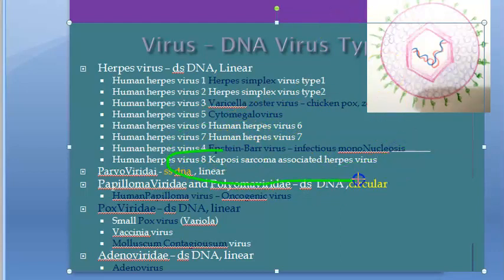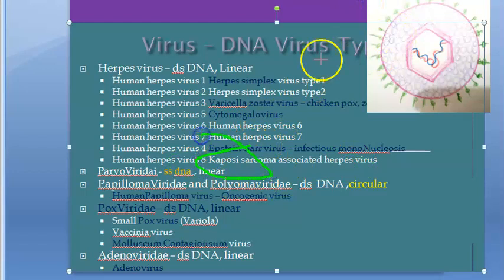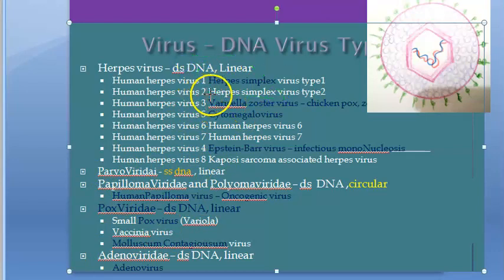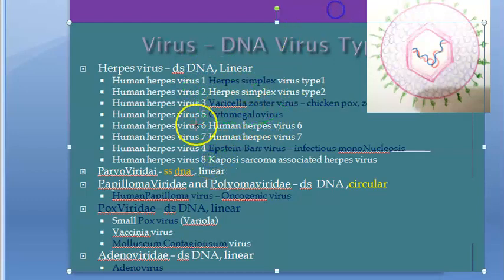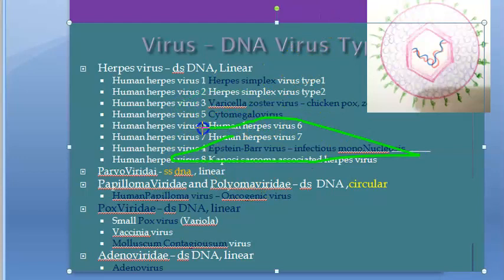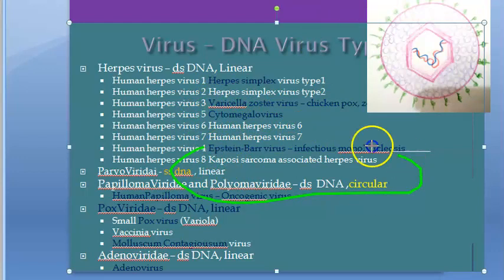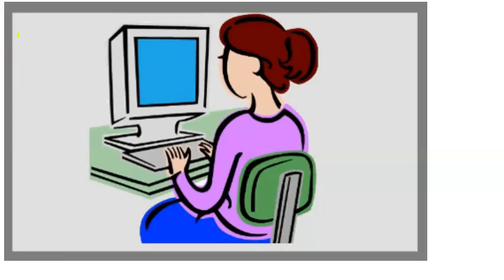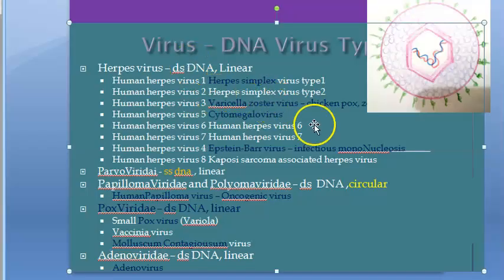Human herpes virus 8 is Kaposi sarcoma associated herpes virus, which probably causes Kaposi sarcoma. So to summarize: 1 and 2 are simplex, 3 is varicella zoster, 5 is cytomegalovirus, 4 is Epstein-Barr virus, 6 and 7 are not important, and 8 is Kaposi sarcoma associated herpes virus.